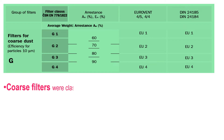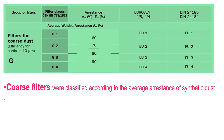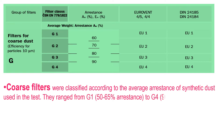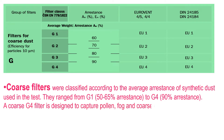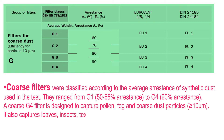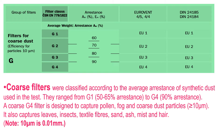G rating — coarse filters — were classified according to the average arrestance of synthetic dust used in the test. They range from G1 at 50–65% arrestance to G4 at 90% arrestance. A coarse G4 filter is designed to capture pollen, fog, and coarse dust particles greater than or equal to 10 micrometers. It also captures leaves, insects, textile fibers, sand, ash, mist, and hair. Note: 10 micrometers equals 0.01 millimeters.